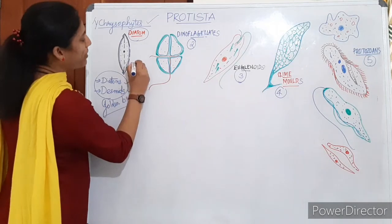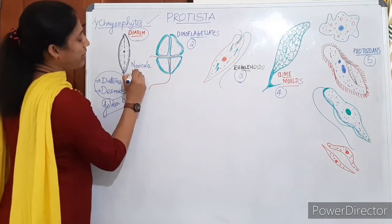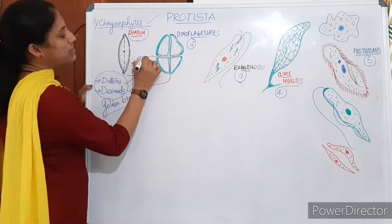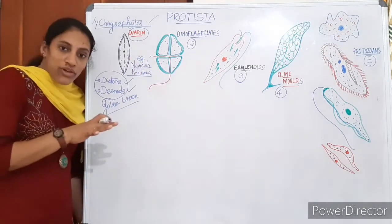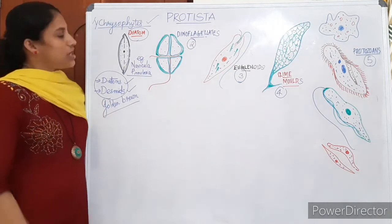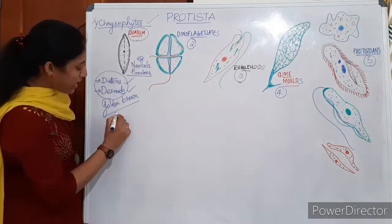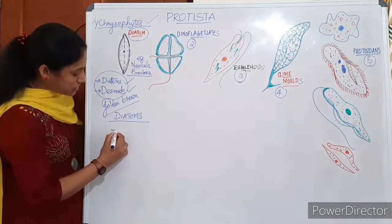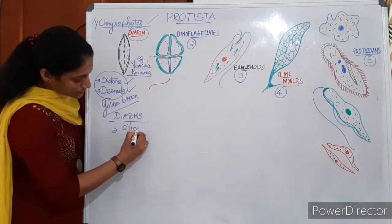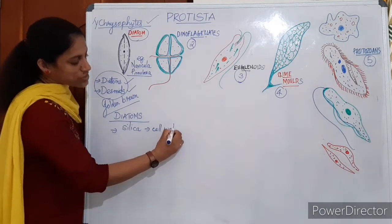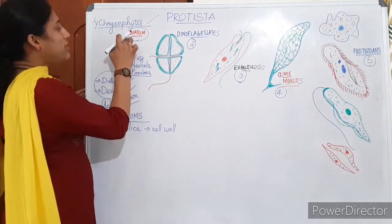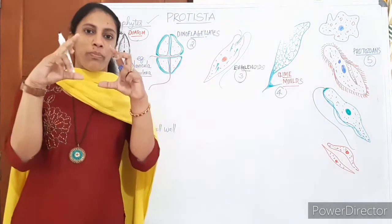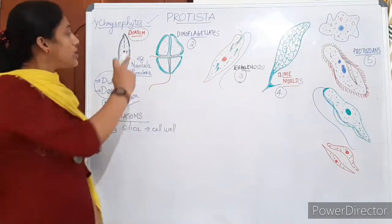Navicula and Pinularia are examples of diatoms. Diatoms mainly float on the water surface and are mostly seen in oceans. Diatoms possess a silica-rich cell wall — a siliceous cell wall. This cell wall remains as two overlapping halves, like the two halves of a soap box.